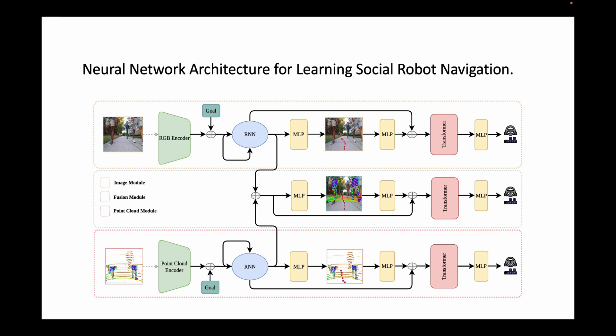We have two unimodal heads on the top and bottom part of our network, and in the middle we have our multimodal network which uses features from both the image and point cloud module.